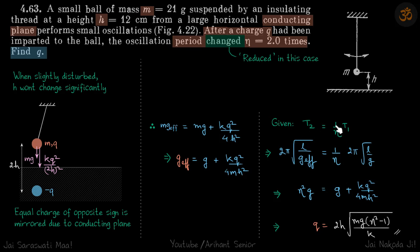So t1 is 2π√(l/g) initially, and t2 will be 2π√(l/g_effective). We put the value of g and g effective here and we'll get the value of q.